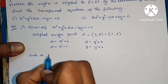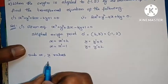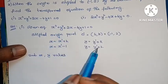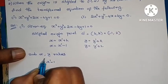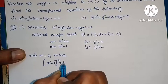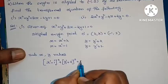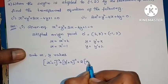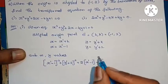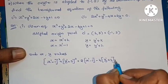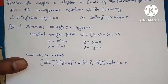Substituting x and y values: in place of x put x dash minus 1, in place of y put y dash plus 2. So we get: (x dash minus 1) whole square plus (y dash plus 2) whole square plus 2 into (x dash minus 1) minus 4 into (y dash plus 2) plus 1 equals to 0.